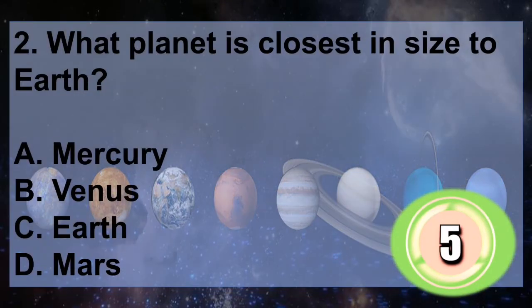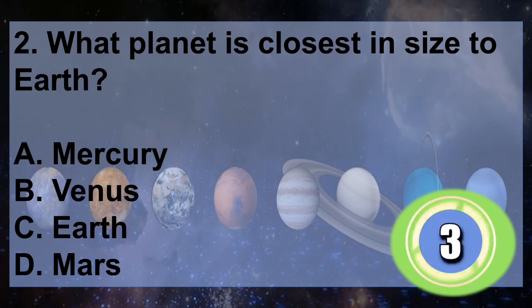Question 2: What planet is closest in size to Earth? A. Mercury, B. Venus, C. Earth, D. Mars. You have 5 seconds to answer. Time's up.